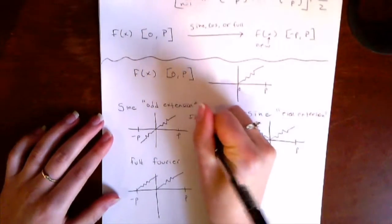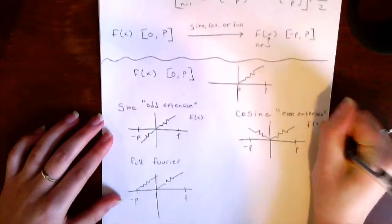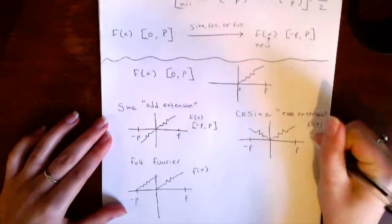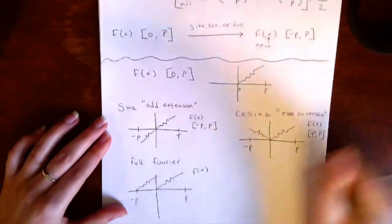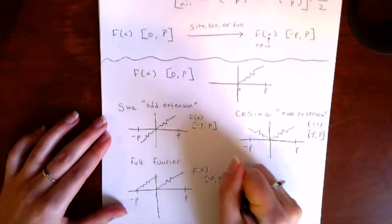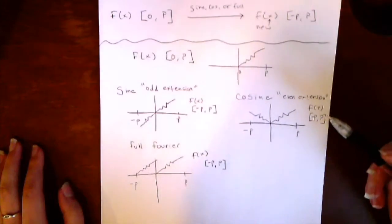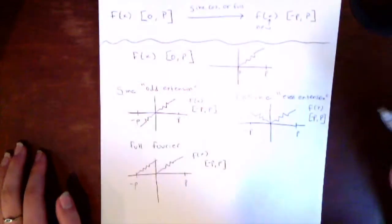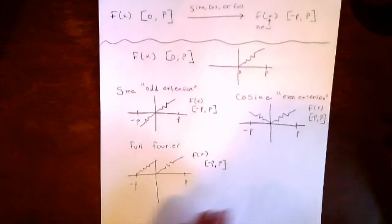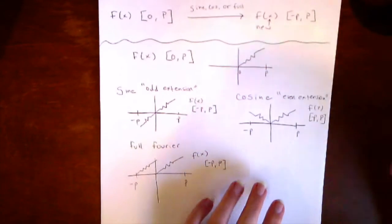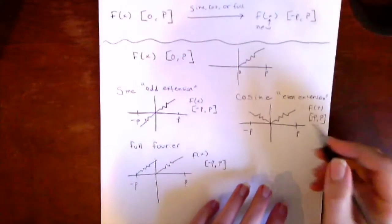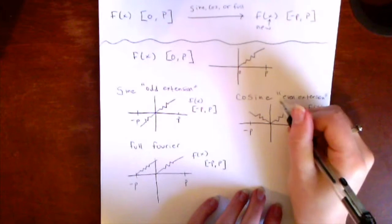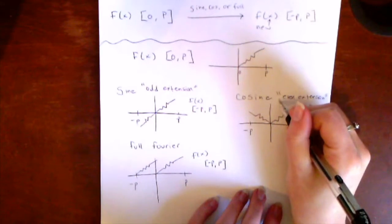Once you have chosen which extension you are using, you will have a new function that is defined on a periodic interval, so you're capable of finding its Fourier series. If you are using either the sine or cosine extension, the next step is to simply find the Fourier series of that function the usual way — first deciding if your new function is even or odd.